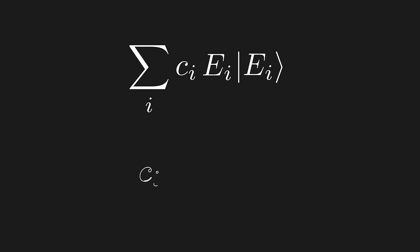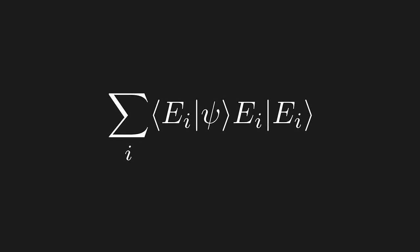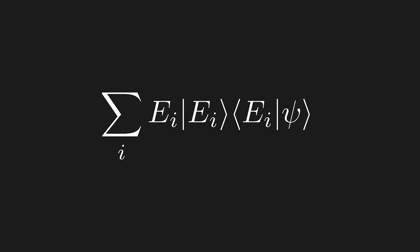So, we can substitute this in. Then, we can move the inner product over to the right. Now, using the power of Bra-ket notation, we can break up this inner product.